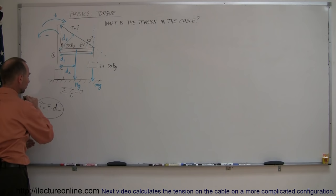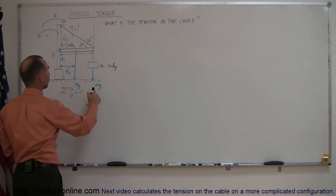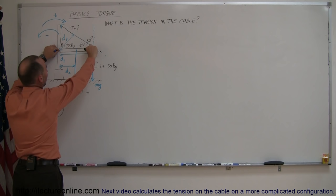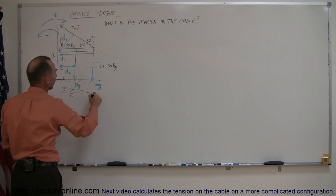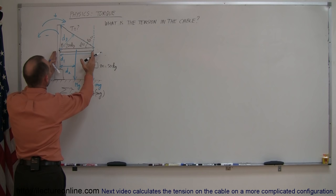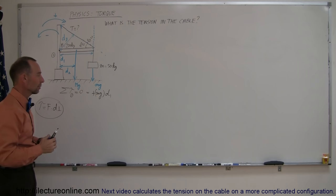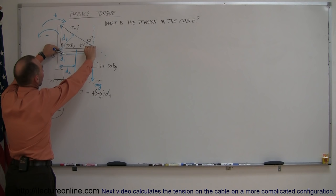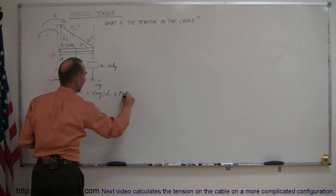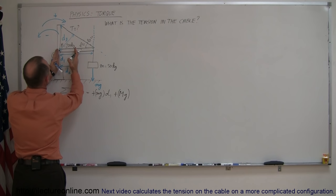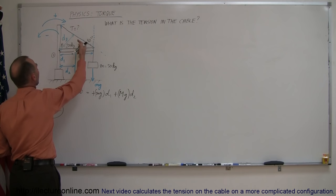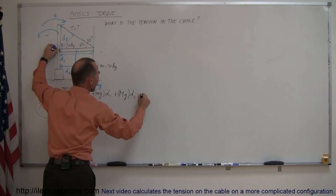Let's sum up all the torques. The first torque is from mg acting downward; since it would cause clockwise rotation, it's a positive torque: plus mg times d1. The second force is the beam's weight, which would also cause clockwise rotation, so it's plus Mg times d2. Finally, the tension in the cable would cause counterclockwise rotation, so that's minus T times d3.